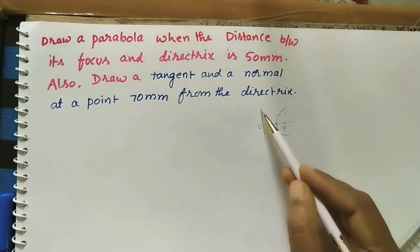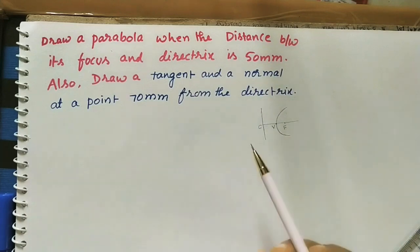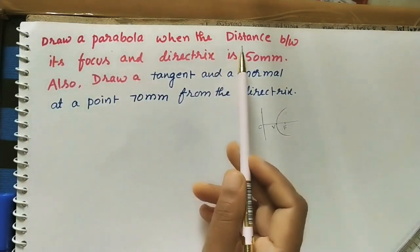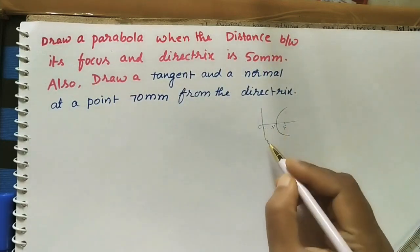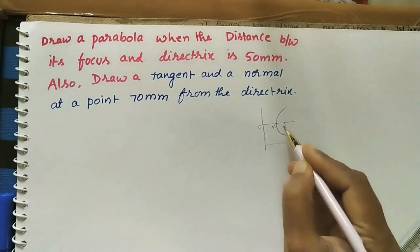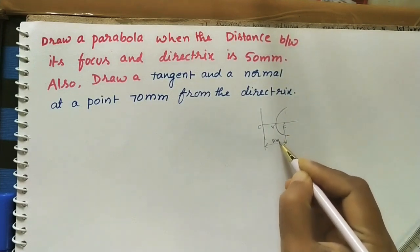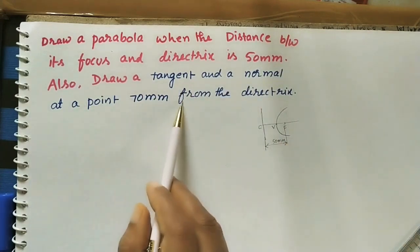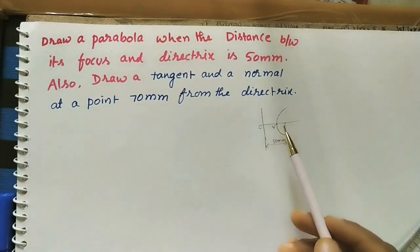C is the intersection point of the directrix and axis, and V is one of the points of the parabola on the axis. So let us take the given question: draw a parabola when the distance between its focus and directrix is 50 mm. Also draw tangent and normal at a point 70 mm from the directrix. So after doing this curve we need to draw the normal and tangent to this curve.